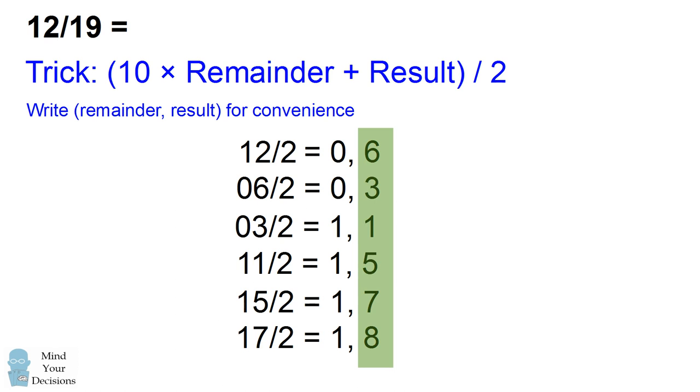So you can use this shorthand to figure out the decimal expansion of 12 over 19. We read off the second numbers. This is 6, 3, 1, 5, 7, 8. And you can check on your calculator. This is in fact 12 divided by 19. So it's a pretty neat trick.